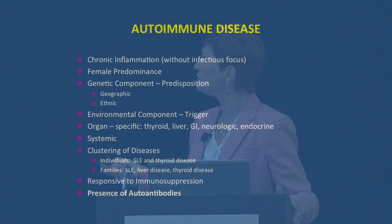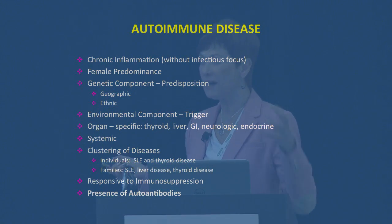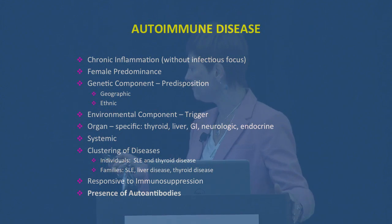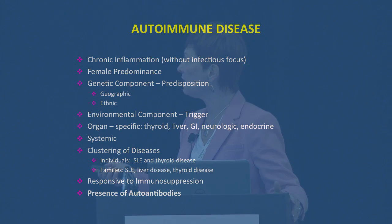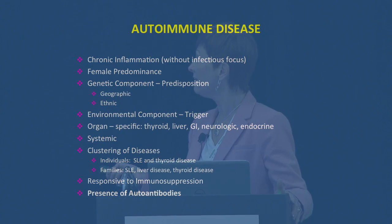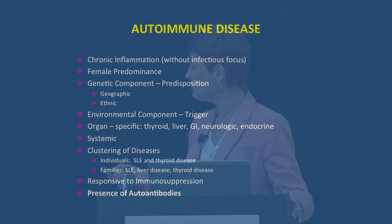So why ANA testing? ANA tests are one very important part of a larger group of disorders called autoimmune disease, and they have very interesting characteristics. First of all, there is chronic inflammation without any focus of infection that we can find. There's a female predominance. There's a genetic component, which seems to be a predisposition, and that even has geographic and ethnic characteristics to it.